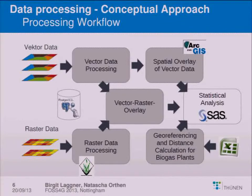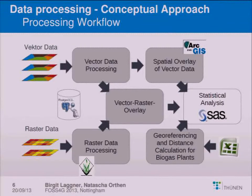On this slide, you can see the processing workflow and the used software products. Because of the different data models, there are two parts: vector processing and raster data processing. At the moment, the data is stored in a PostgreSQL database with a PostGIS extension. Because most of the data is available as vector data, we use a spatial overlay of all vector data as the main database. The raster data processing is done in GRASS. After all processing is finished, we link the vector data to the raster data.